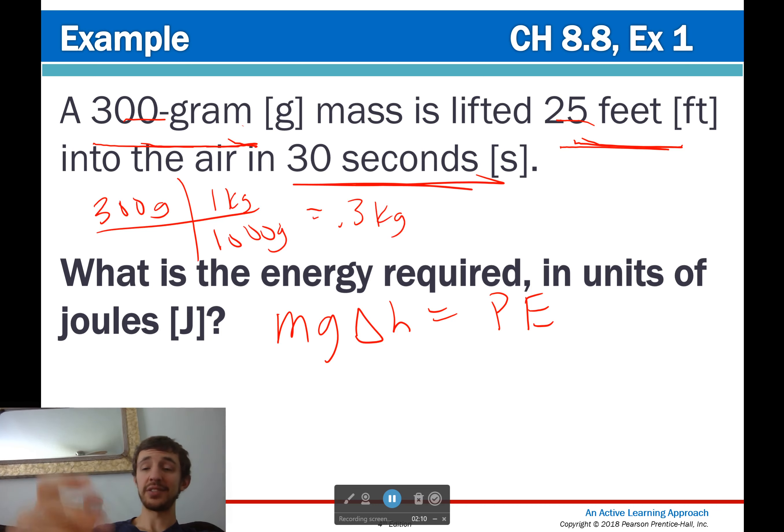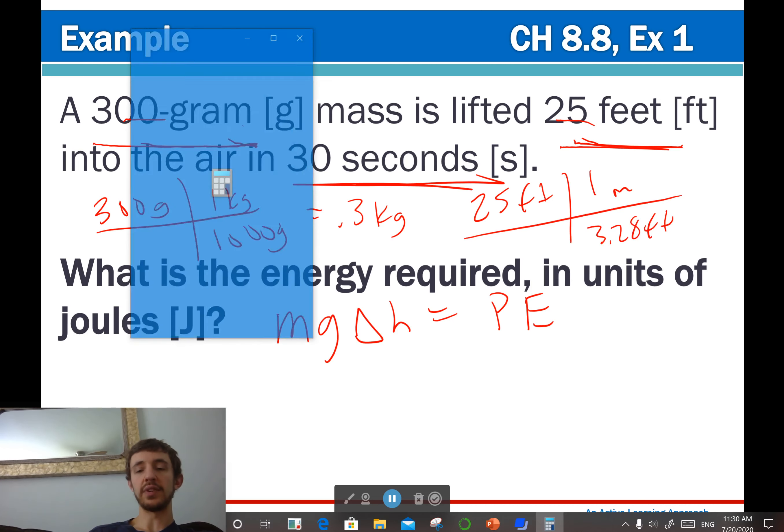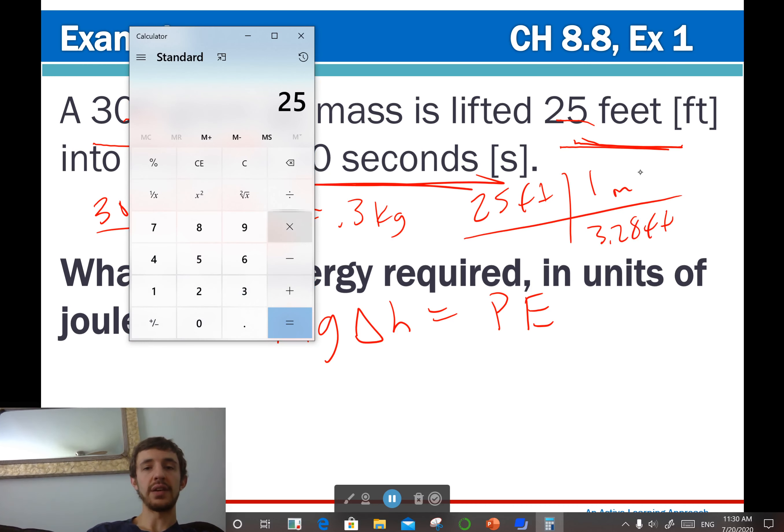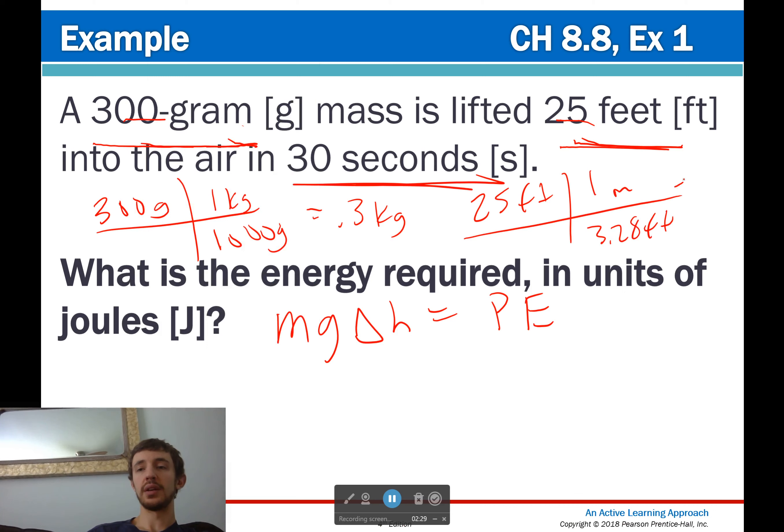25 feet, we need in meters. So, 25 feet, 3.28 feet in 1 meter. And let's use my handy calculator to figure out what that should be. So, 25 divided by 3.28 is equal to 7.62 meters.